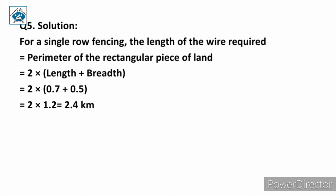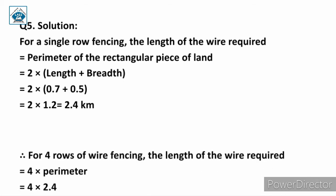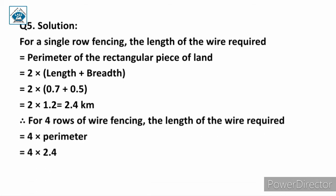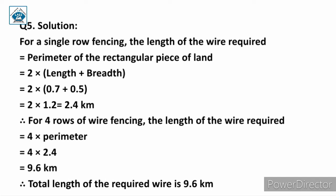That is for a single row fencing. In the question we are asked for four rows. Therefore, for four rows of wire fencing, the length of wire required is equal to 4 into perimeter, which is 4 into 2.4, which equals 9.6 kilometers. Therefore the total length of the required wire is 9.6 kilometers.